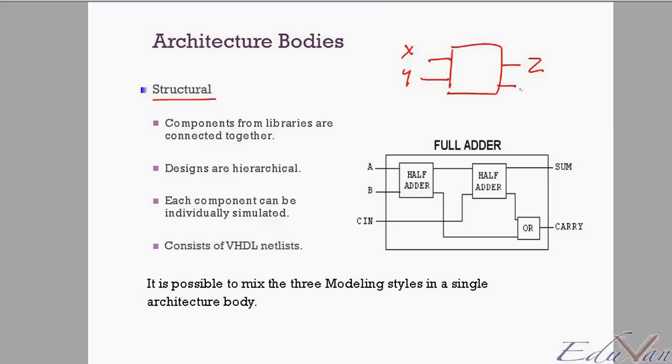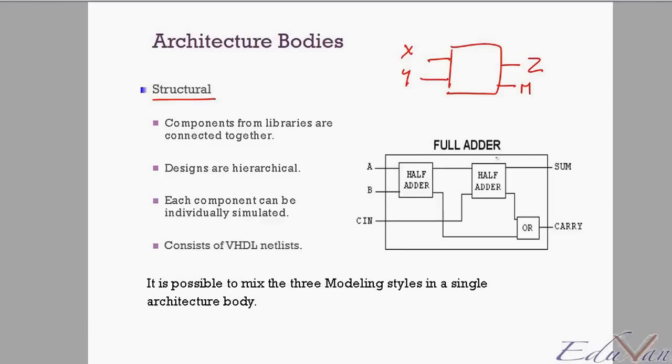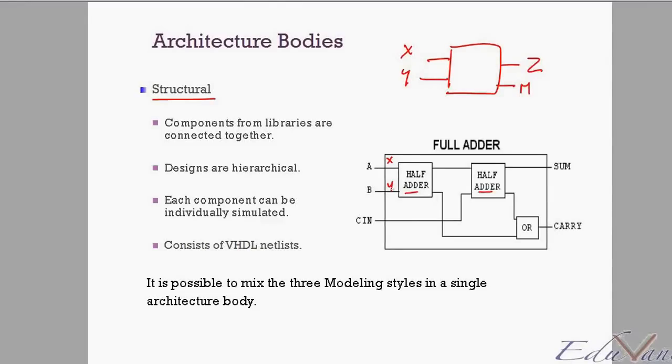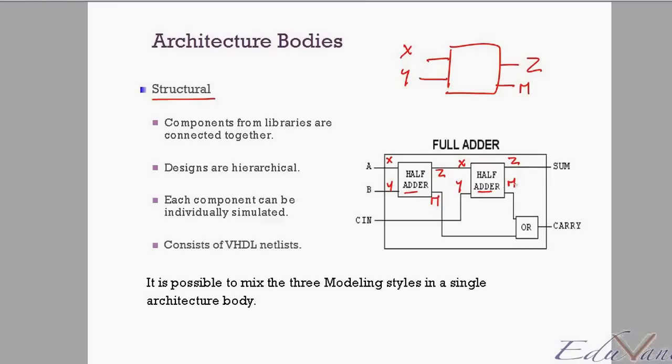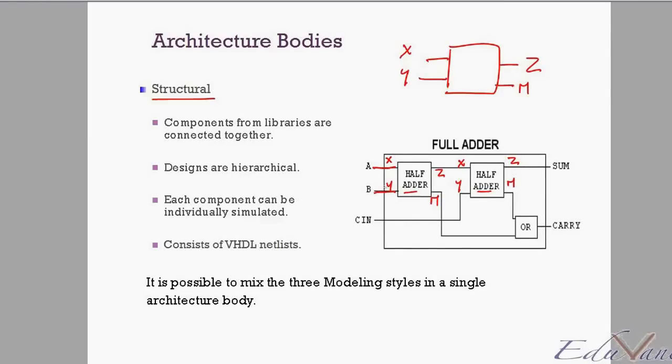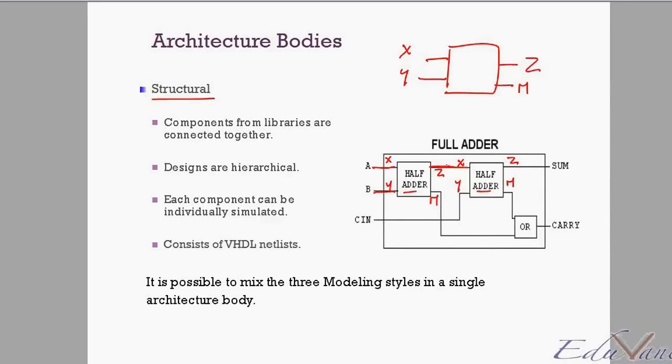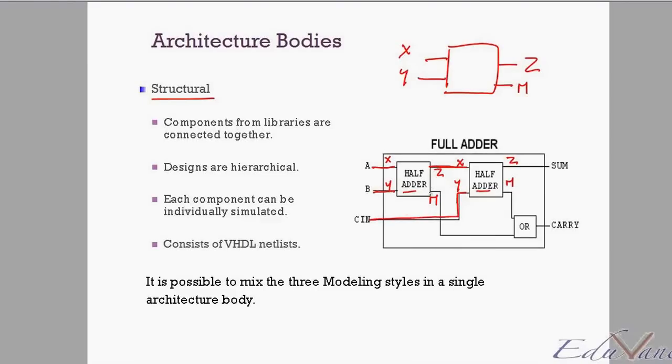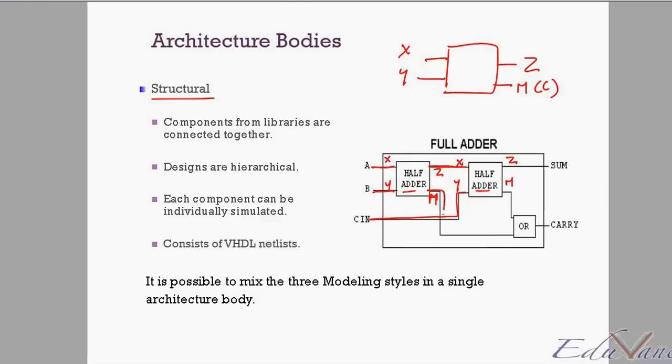Then I would call the half adder two times here and here such that X, Y, Z, M, X, Y, Z, M. And I map the first X and Y to A and B. I map the first full adder. I map the second X to Z of the first full adder. I map the Y to the carry in. I map the output M which was actually the carry of your half adder to your OR gate, and then I OR the two carries.